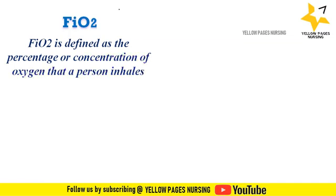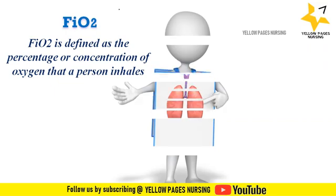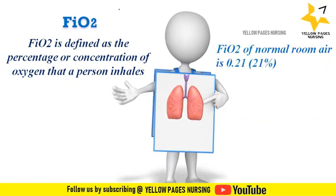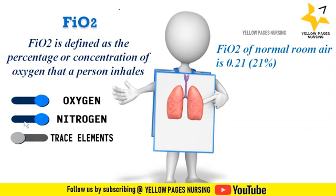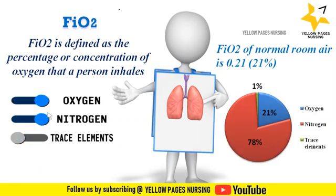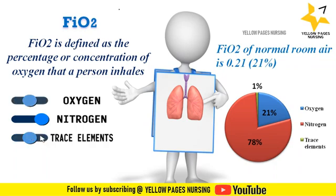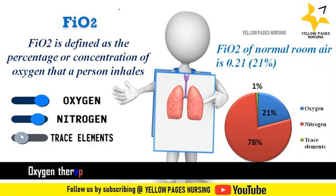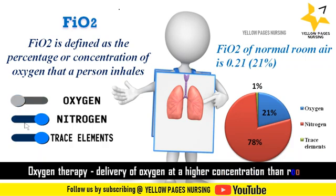FiO2 is defined as the percentage or concentration of oxygen that a person inhales. FiO2 of normal room air is 0.21, that is 21%. The air we inhale is made up of 21% oxygen, 78% nitrogen, and 1% trace elements such as argon, carbon dioxide, neon, helium, and methane. Oxygen therapy — delivery of oxygen at a higher concentration than room air, at a higher FiO2 — is used to treat hypoxia.